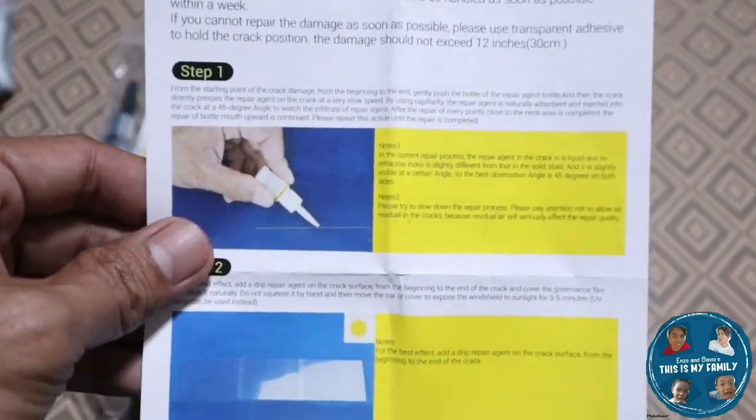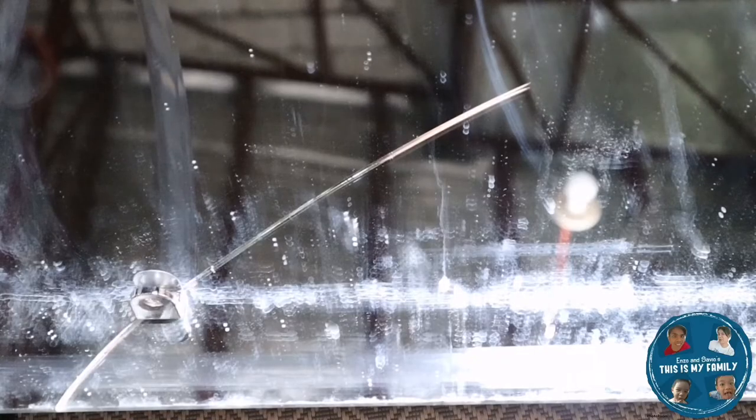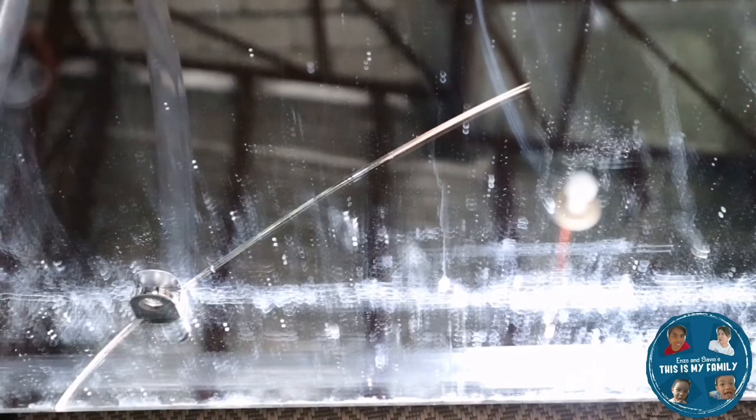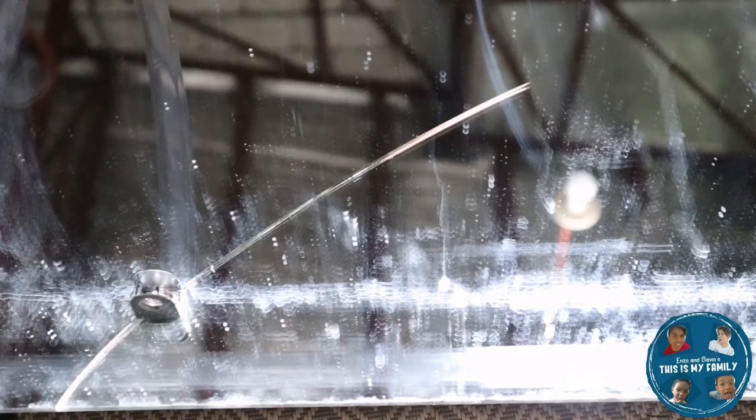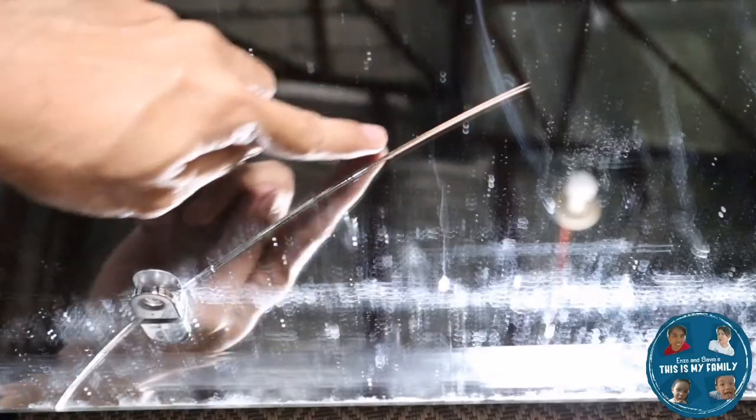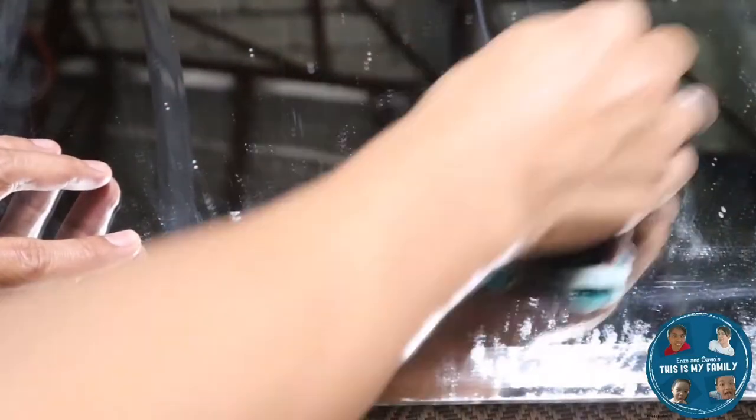And of course before starting let us read first the instruction, complete instruction of how the two things write. Okay so this is the mirror, ito po ang salamin po namin sa CR. As you can see yun medyo meron, medyo hindi, medyo meron syang crack talaga. So bago lang po itong salamin namin kaya na-disappoint ako ng konti, nabasag ko nung ini-install ko. Okay so linisan muna natin.